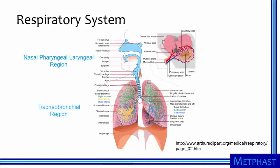Next is the tracheobronchial region, which encompasses the windpipe or trachea, the branching of the trachea into the two lobes of the lungs, and the additional branching of the airways that is similar to the branches of a tree.